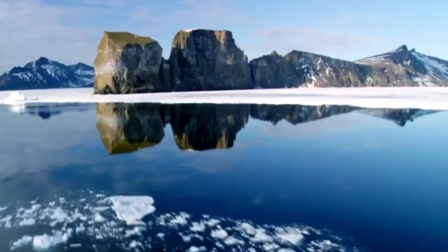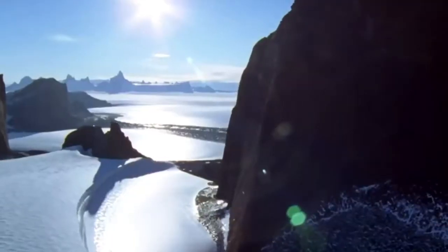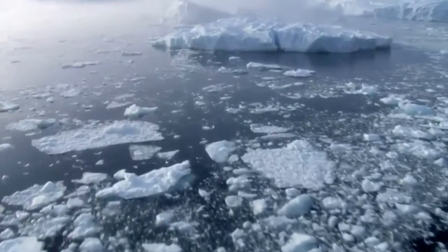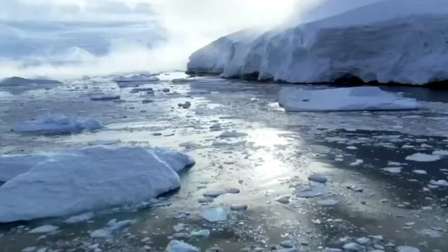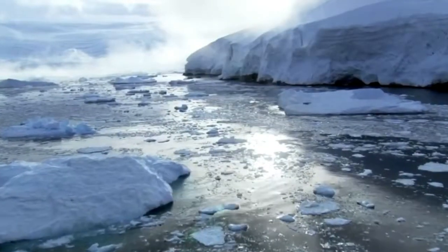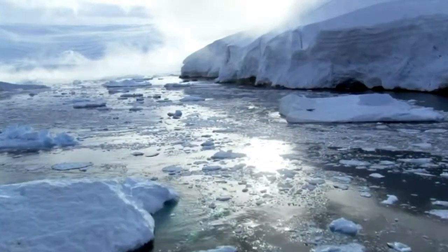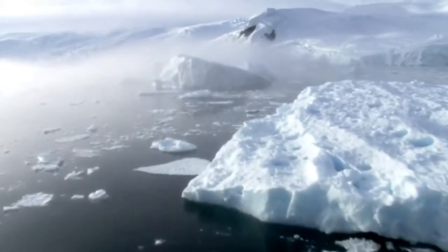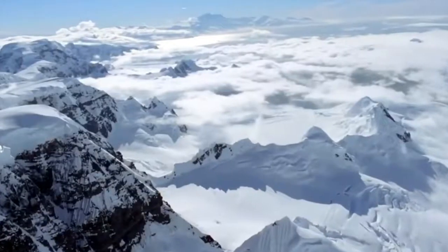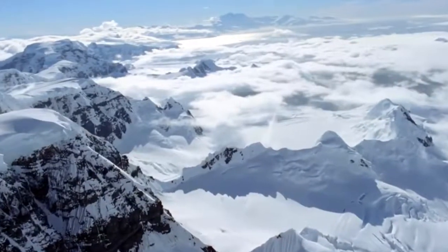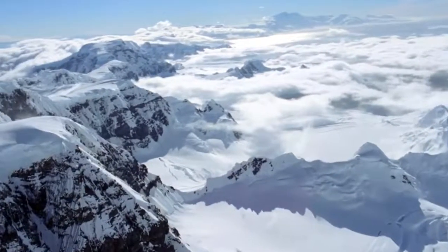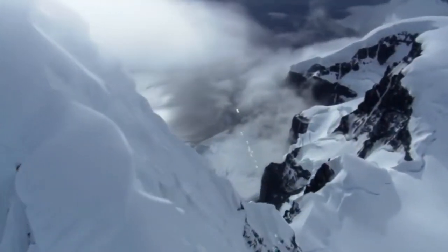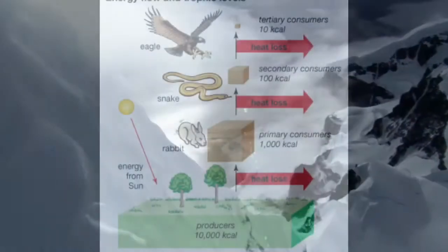Tundras cover over 20% of the earth's surface and make up some of the world's largest biomes. These regions are found in the Arctic and experience the coldest, harshest, and most brutal conditions. The tundra's summer growing season is just 50–60 days, and other than this, tundras are snow-covered with few plants and animals essentially clinging to life.